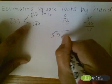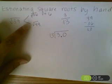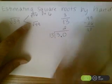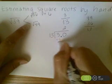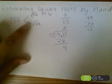Now, 13 doesn't go into three, so add a decimal and a zero. 13 goes into 30 two times. 13 times 2 is 26 with a remainder of 4.